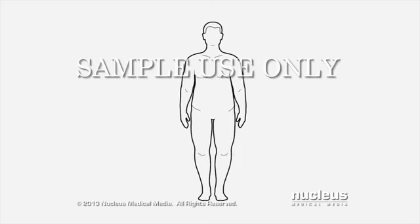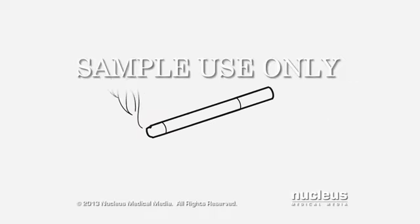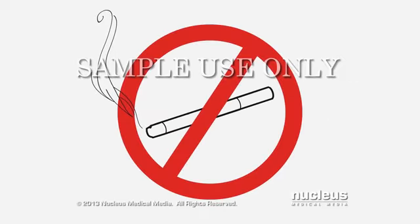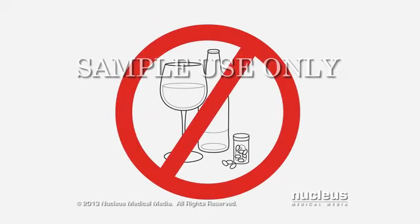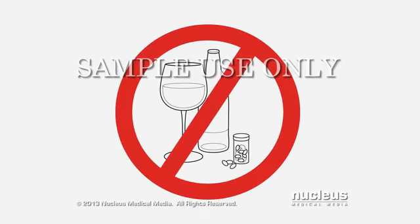Your doctor may recommend lifestyle changes to treat obstructive sleep apnea, including losing weight, sleeping on your side, not smoking, and avoiding substances that can make you sleepy, such as alcohol and sedatives.